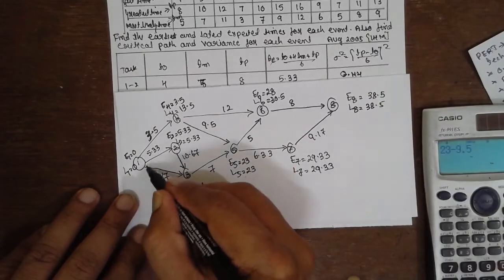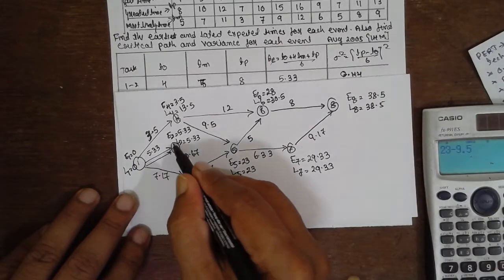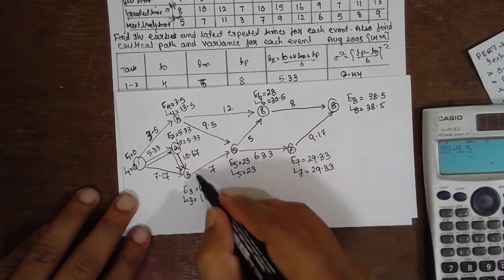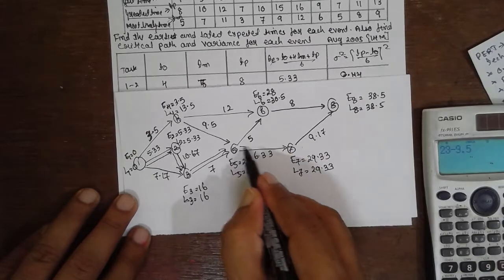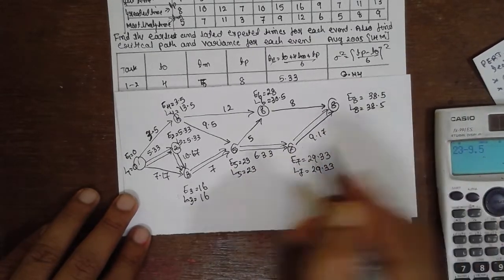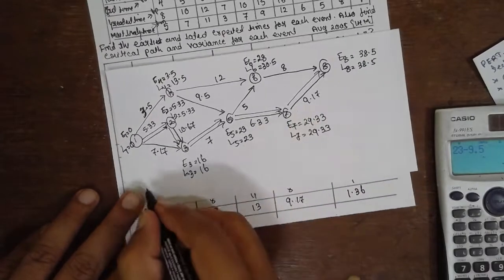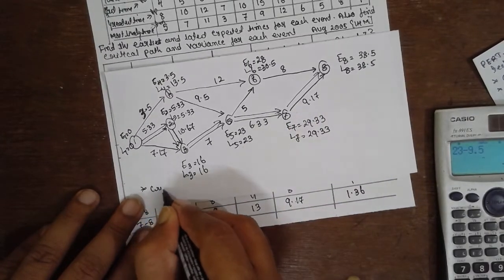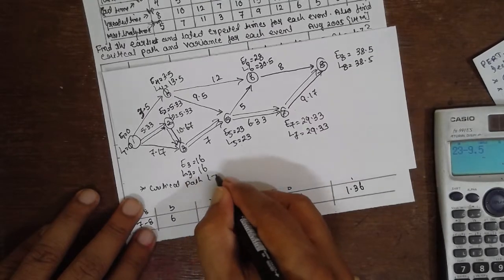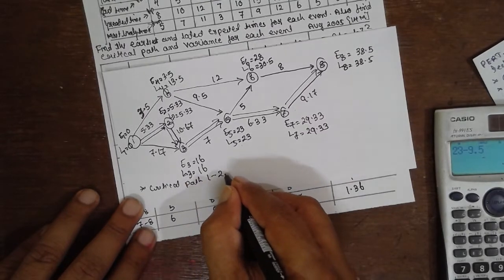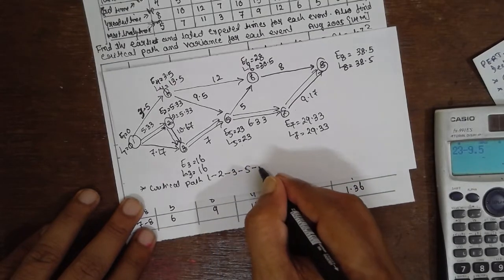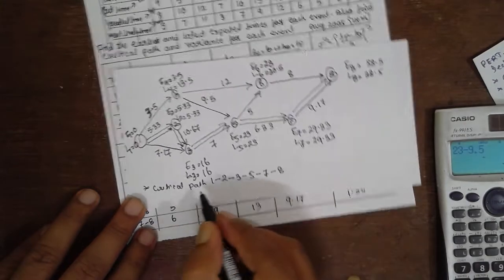Go for the critical path — where E and L values are equal. The matching pairs are: 0 and 0, 5.33, 16 and 16, 23 and 23, 29 and 29, 38 and 38. The critical path is 1-2-3-5-7-8.